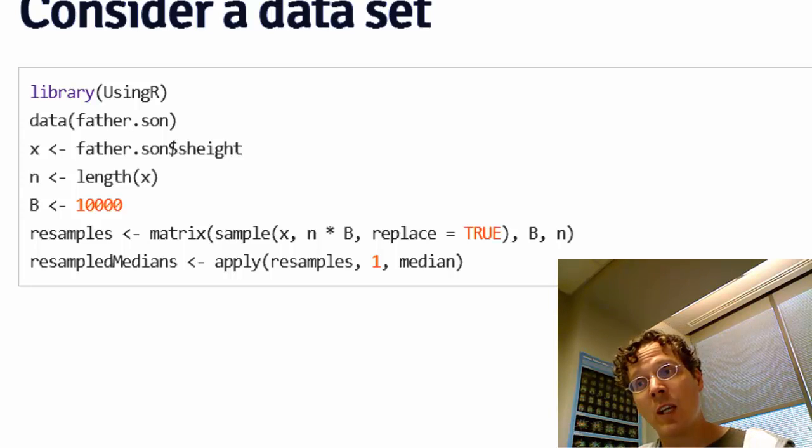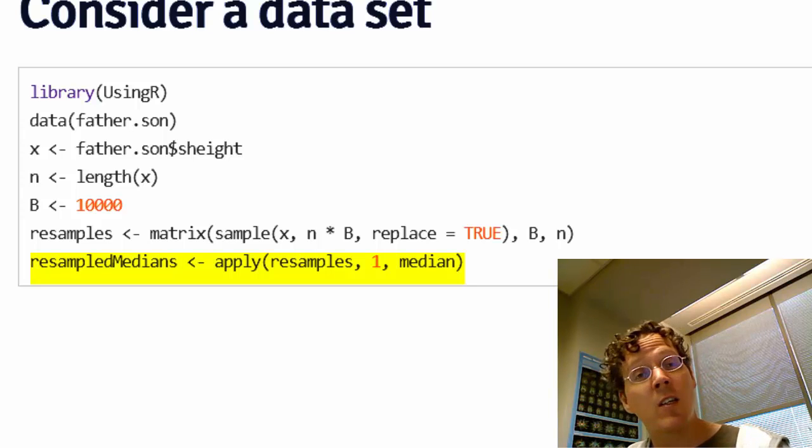And then let's suppose that the statistic I'm interested in is the median. So I'm going to take for each of these data sets, each of these resampled data sets, and I'm going to apply the median. And that's what this final apply statement does.